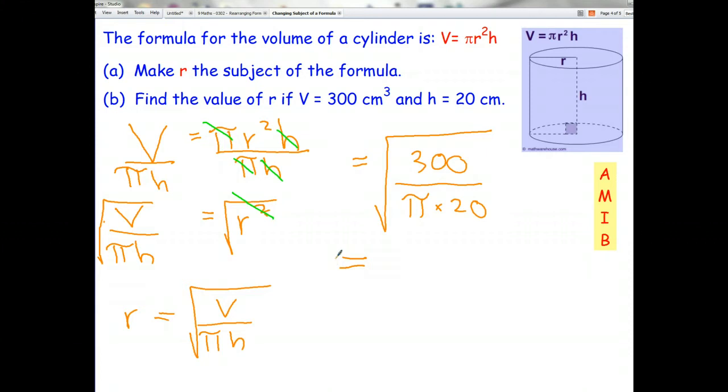So, hit the clear button. And the first thing I need is the square root. Inside of that, I put a fraction. 300 on top. Pi times 20 in my denominator. And that gives me 2.185.